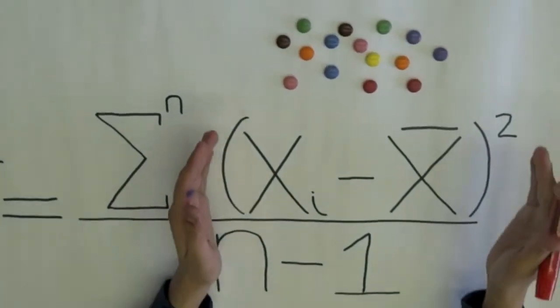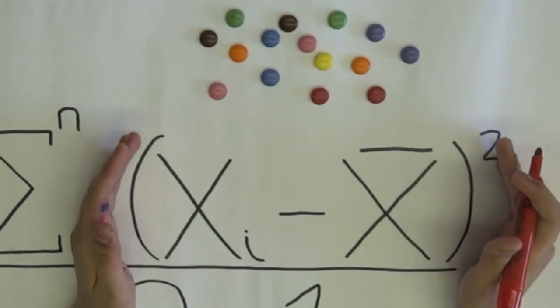To calculate sample variance, the first step is to find the difference between each data point and mean. This difference can be represented as xi minus x bar.